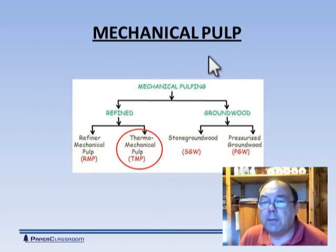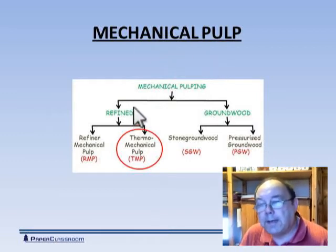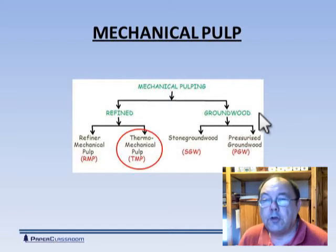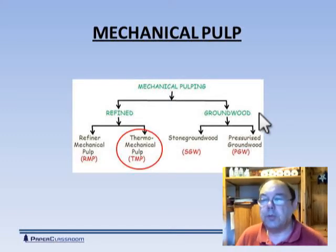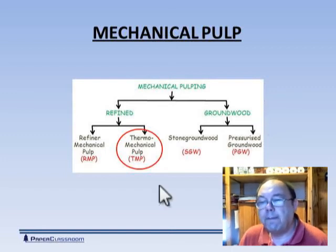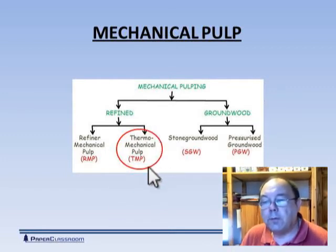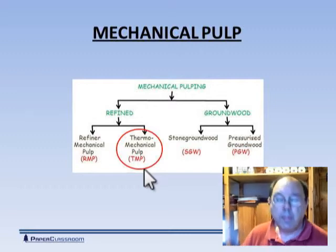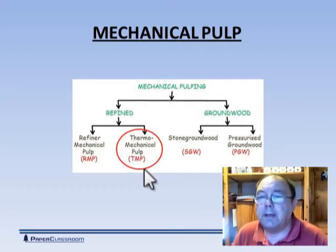A little more detail about mechanical pulps. We have refined mechanical pulps — the newer materials — and the old-fashioned groundwood pulps using a great big grindstone. One of the most common methods of mechanical pulping is TMP — thermal mechanical pulp — so let's look at that in a little more detail.